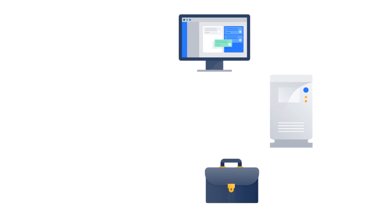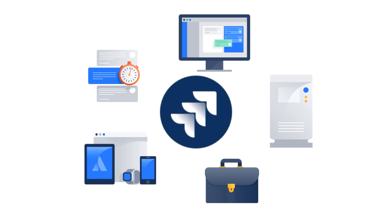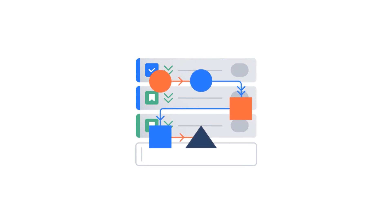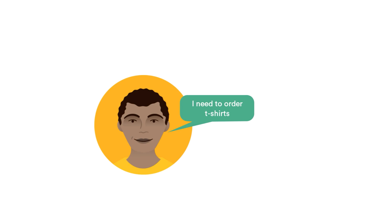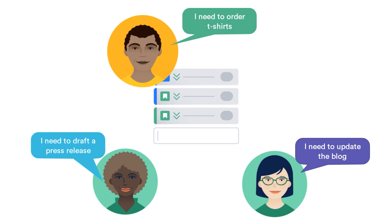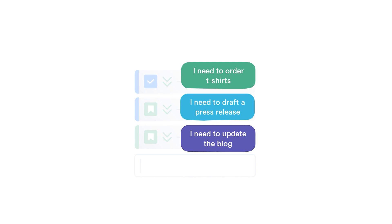JIRA projects represent your real-life projects, and just as there are different types of projects in the real world, there are different types of projects in JIRA. All projects in JIRA have tasks and a process these tasks follow from creation to completion. A task is simply a piece of work — for example, I need to order t-shirts for a new marketing campaign. In JIRA, tasks are called issues and are managed in projects, and every issue belongs to just one project.